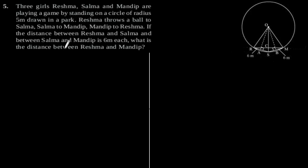Exercise 10.4 Question number 5. Three girls Reshma, Salma and Mandip are playing a game by standing on a circle of radius 5 meter drawn in a park.